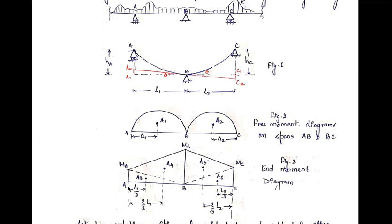The CG of triangle a3 from support A is l1/3, and the CG of triangle a4 from support A is 2l1/3. The trapezium between B and C can also be divided into two triangles: a5 and a6. The CG of a5 from support C is 2l2/3, and the CG of a6 from support C is l2/3.